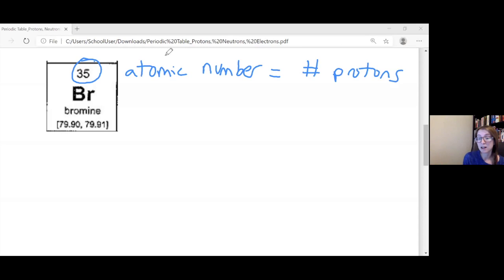Number of protons identify an element. Anything with 35 protons is bromine, and any atom of bromine has 35 protons. No exceptions, it'll never change. Right off the bat, that's the easiest question to answer. We know it's bromine, we know it has 35 protons.